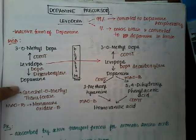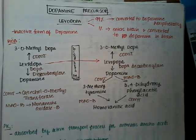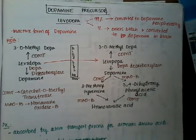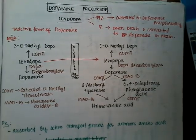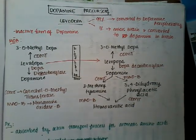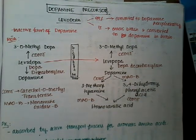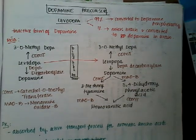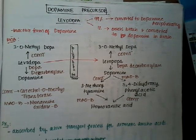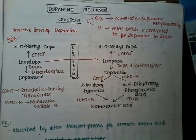Whenever levodopa is converted into dopamine peripherally, it has many adverse effects like tremors and cardiac actions. So levodopa is always given along with dopa decarboxylase inhibitors like carbidopa or benserazide to reduce these peripheral side effects.